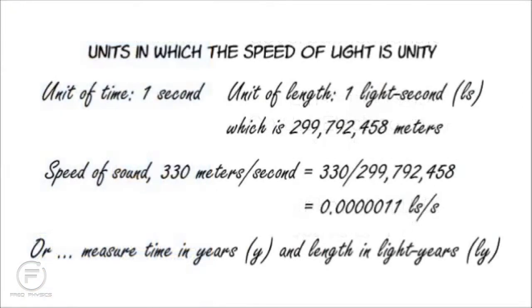Both of these papers are available in the Dover Publications book of reprints of the original papers — translations, since they were originally in German — available for about $10 from Dover Publications. The speed of light is central to relativity, and since it keeps coming up, it'll make our life a lot simpler if we choose units in which the speed of light is one. We'll keep the second as our unit of time, but instead of meters, use light seconds as the unit of distance. A light second is approximately 300 million meters, which is almost the distance to the moon.